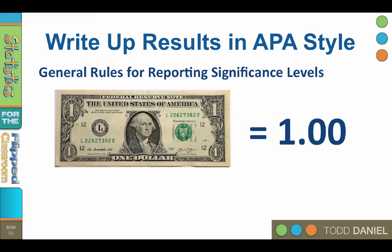There are some general rules for reporting significance levels. To understand these rules, keep in mind an analogy using a dollar. Imagine that a dollar is 1.00 or 100%, and any fraction of that dollar could be represented as a decimal.